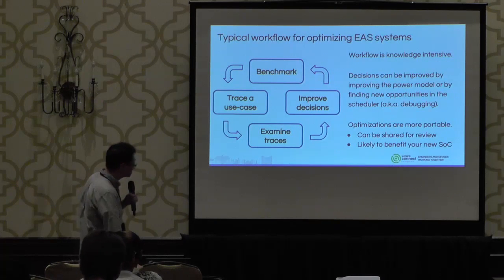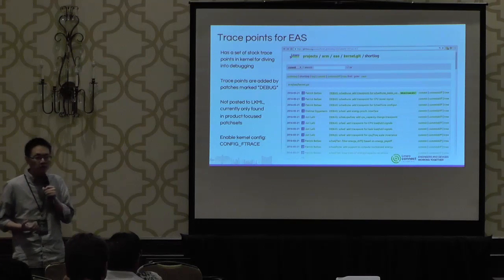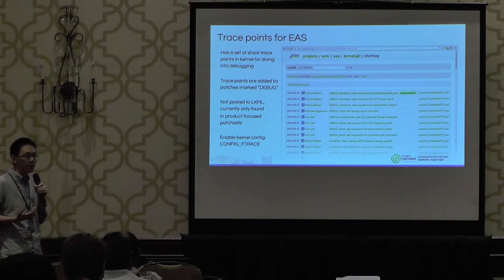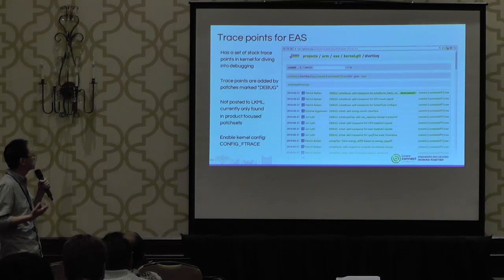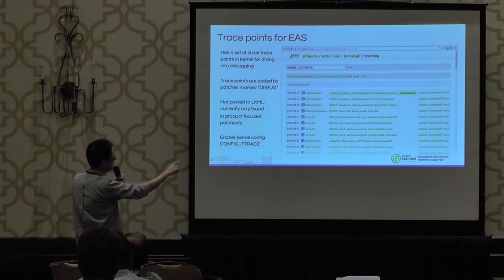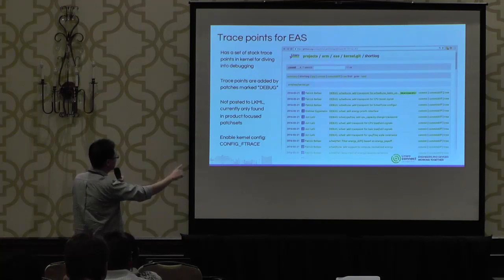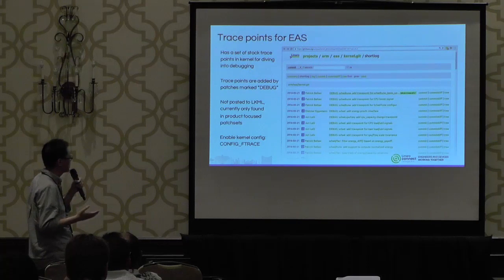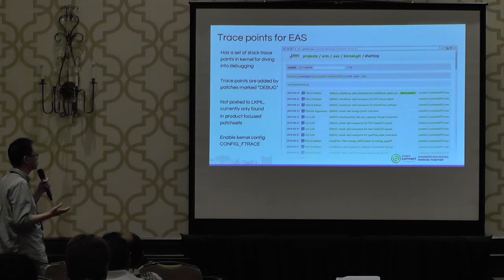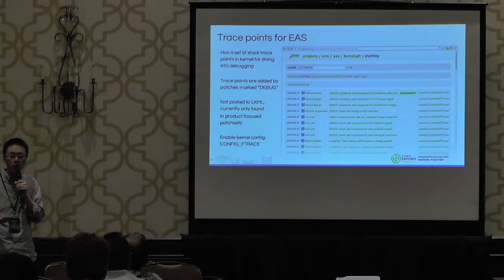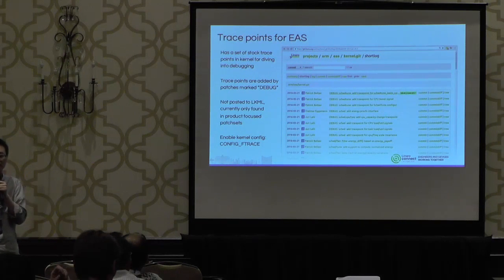To more easily dive into debugging, EAS provides a set of stock trace points. Patrick and Yuri have committed many patches tagged as debug, which include managed trace events for EAS. However, these patches have not been posted to LKML — they can only be found on production-focused patch sets, for example in the AOSP common kernel or in LSK production code 9 branch. In the kernel, to use ftrace you need to enable the kernel configuration for ftrace, but to enable specific ftrace points you need to enable them separately.